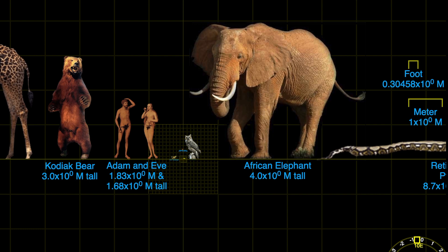Our size is unique in this grand cosmic scale, from which the largest and smallest objects in the universe are relatively balanced around this point of 10 to the 0 meters. But what is a meter?